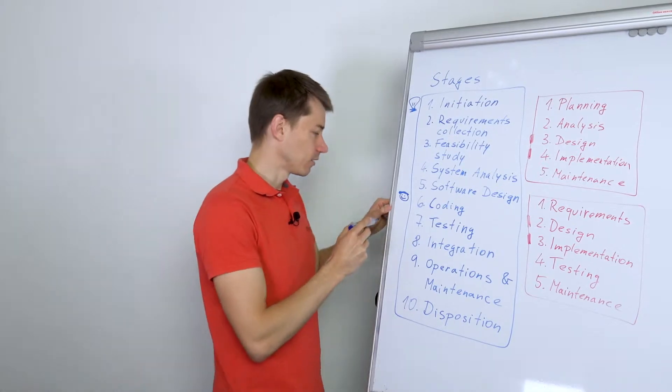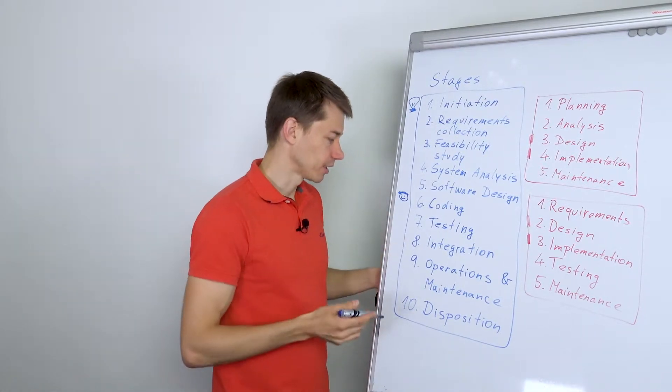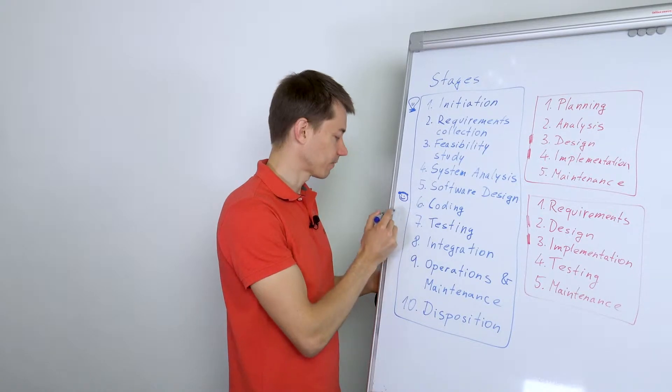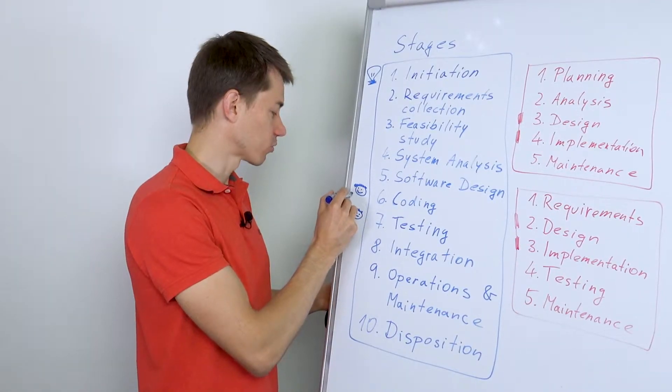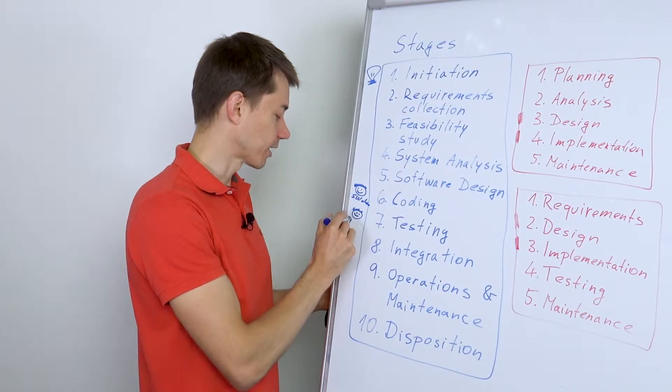Then after maybe three, six, nine, twelve months of coding, someone starts testing it. So again, a tester. So say this is software developer and here is a tester. And the tester starts testing the code developed by a team of developers.